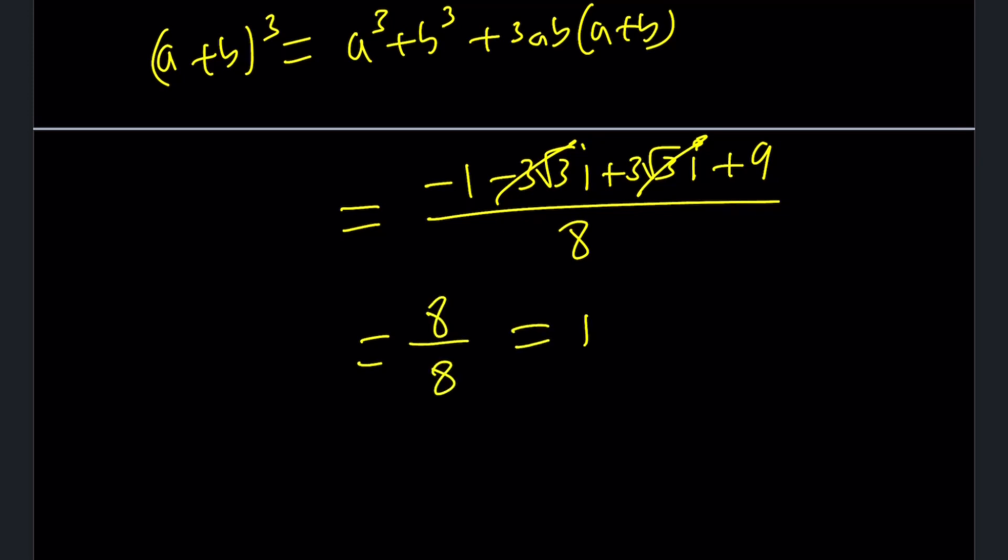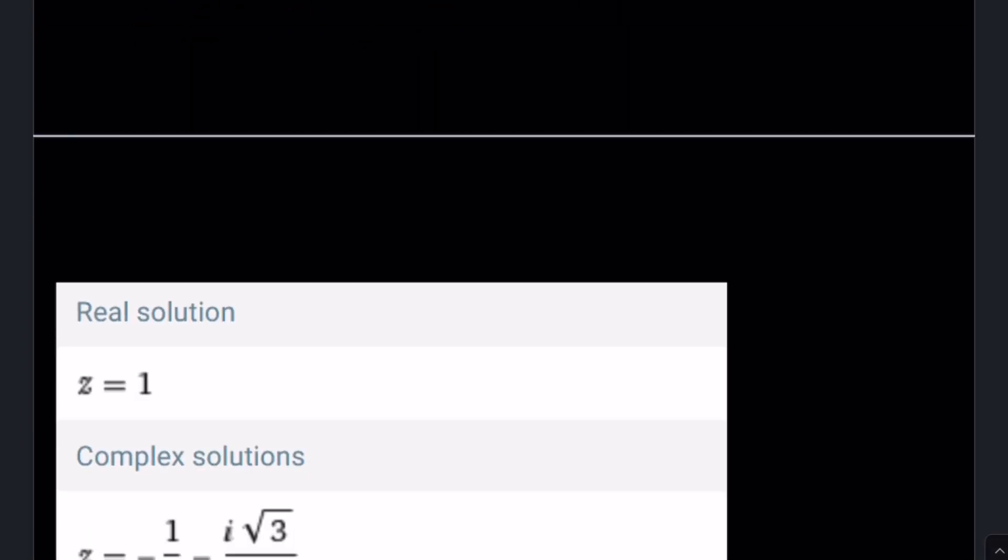And so this is the cube of one of the cube roots. So that shouldn't be a surprise. If you cube one of the cube roots, you should get the original number, which is 1. So let's go ahead and take a look at the results from Wolfram Alpha. Let's see what it gives us.